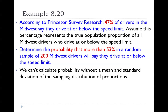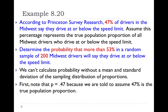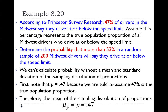We can't calculate probability without a mean and standard deviation of the sampling distribution of proportions. We need to specify the center of the distribution — we need the mean and the standard error. Since p is 0.47, we can calculate the mean of the sampling distribution knowing that μ_p̂ equals p. So μ_p̂ equals 0.47, which is the center of the bell curve.